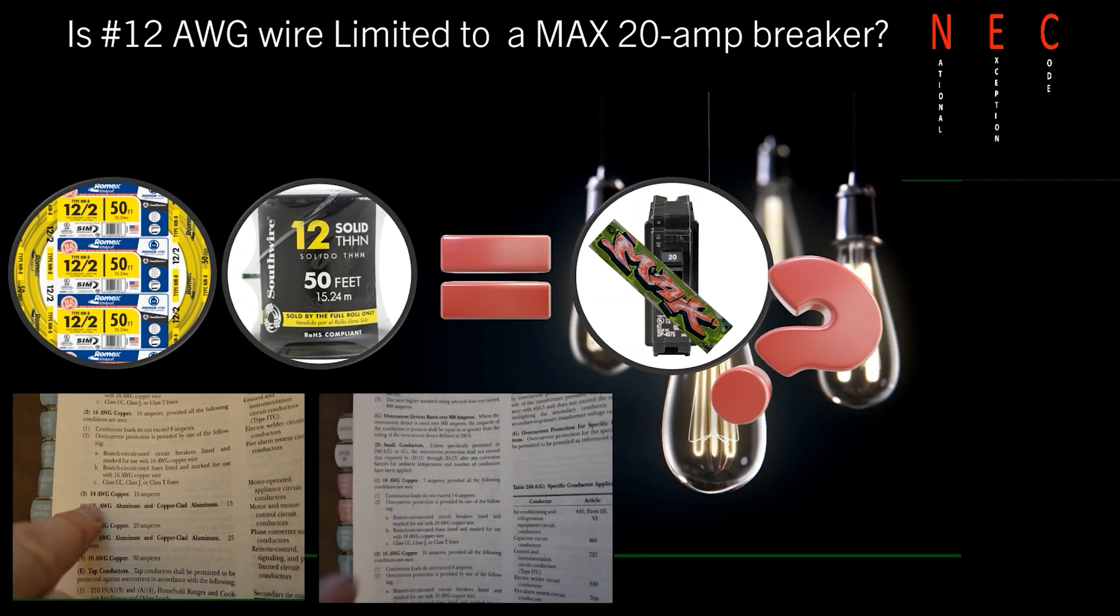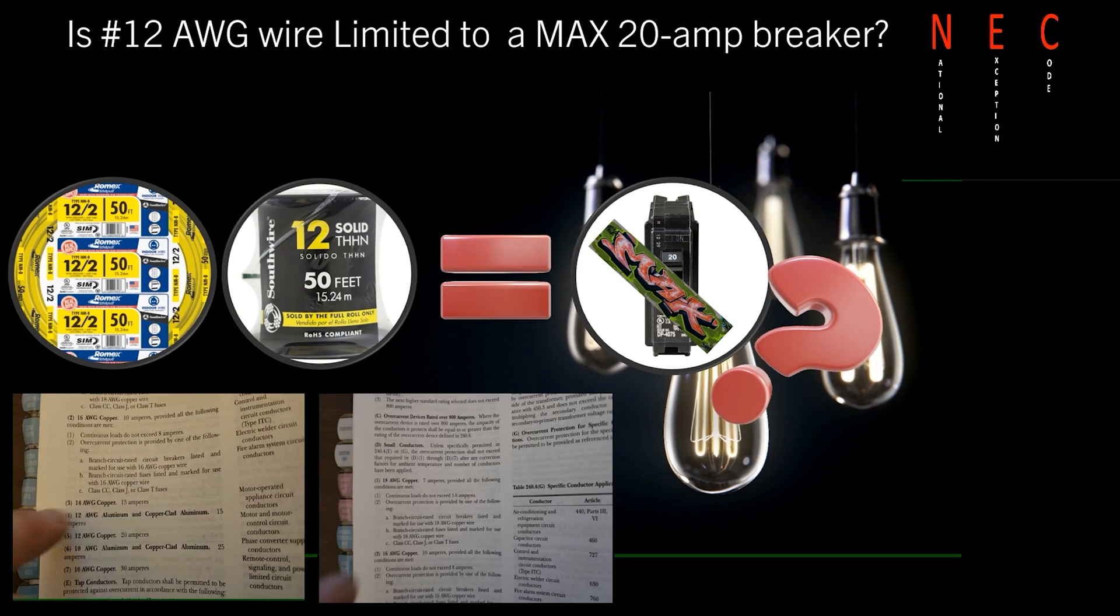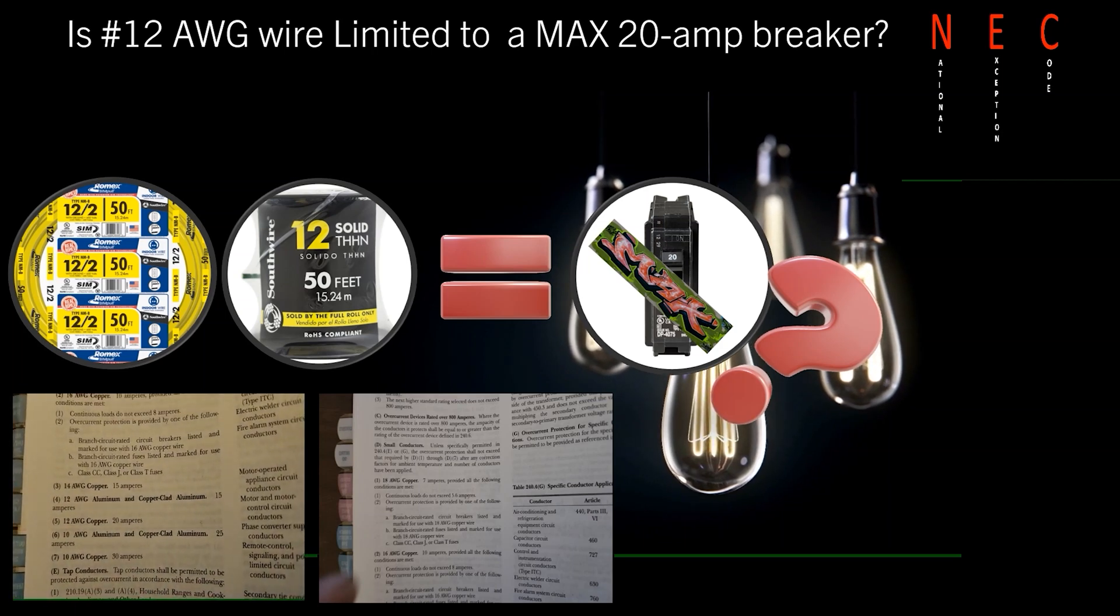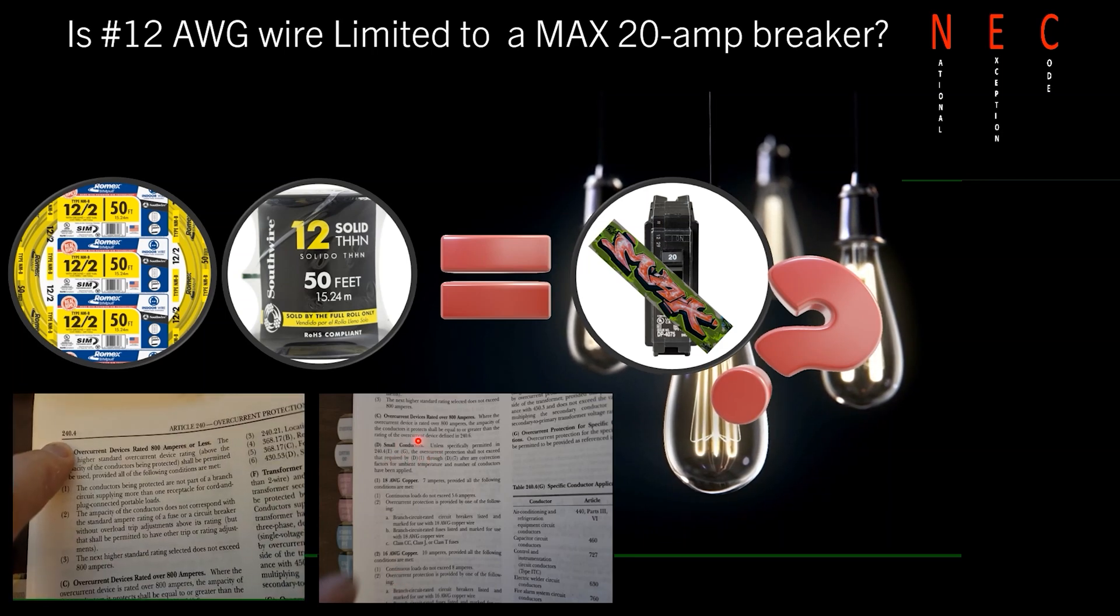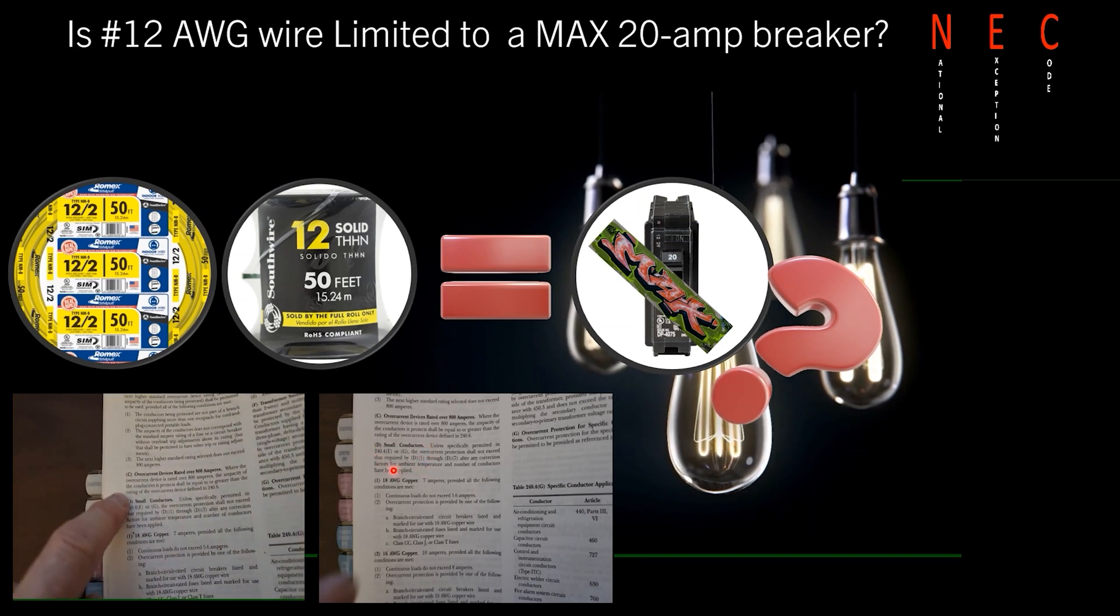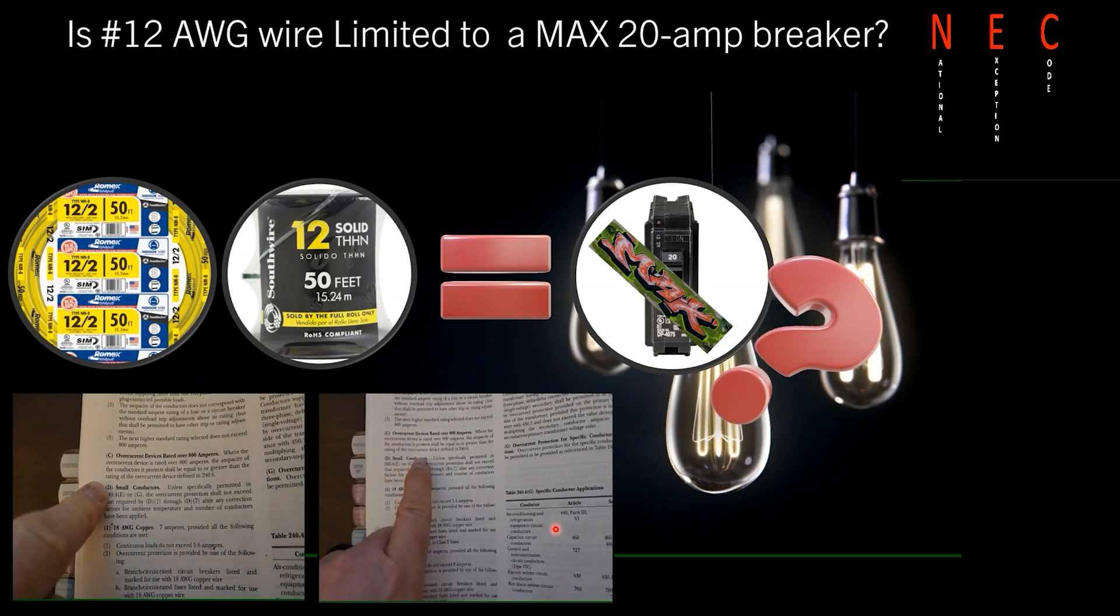That's going to be found right here in the same section. If you look right here in part D, it shows you the two places where it's not required: 240.4(e) and 240.4(g). We're going to go ahead and take a look at those now.